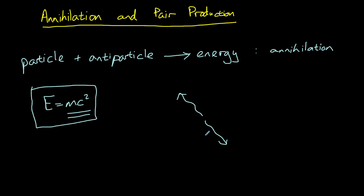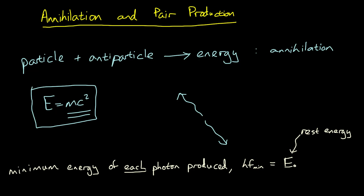This means that the minimum energy of each photon produced is equal to the rest energy of either the particle or the antiparticle. Note that this is the minimum energy because if the particles were not at rest, their energy would be higher than the rest energy. If we use the equation E equals hf, we can determine the minimum frequency of the photons that would be produced.